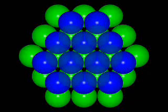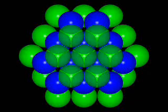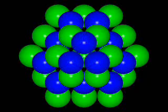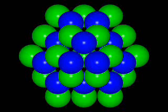Imagine that a second layer of green atoms is added so that it is equivalent to the first layer of green atoms. Then a second layer of blue atoms is added that is equivalent to the first layer of blue atoms. This alternating layering of close-packed layers generates a structure that is known as the hexagonal close-packed structure.